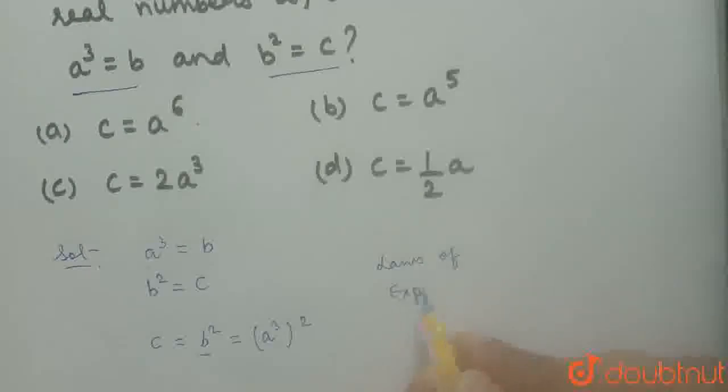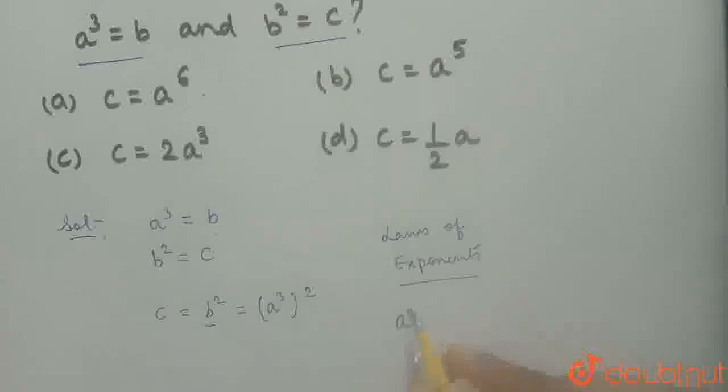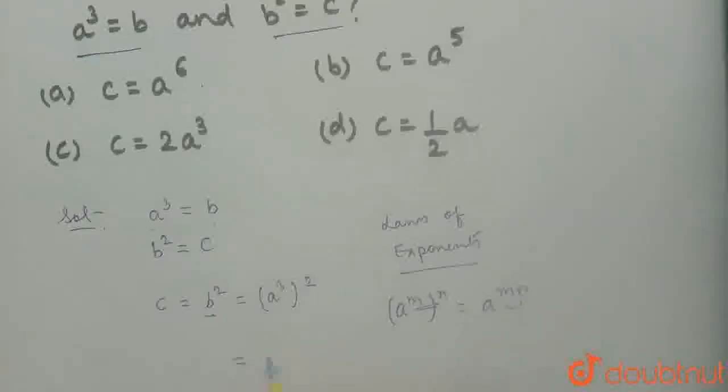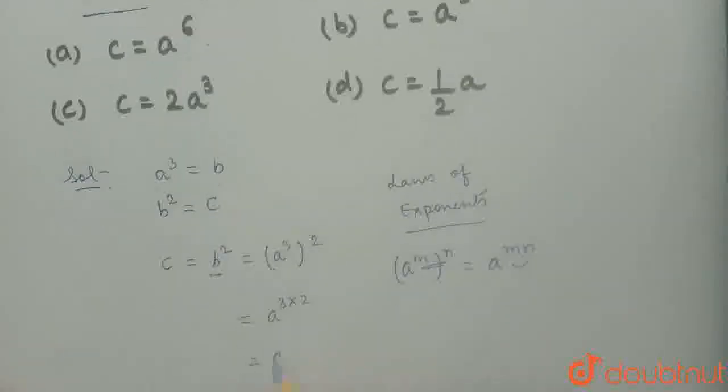we know that (A^M)^N can be written as A^(MN). That is, the powers get multiplied. So here, A raised to power 3 times 2, which gives A⁶.